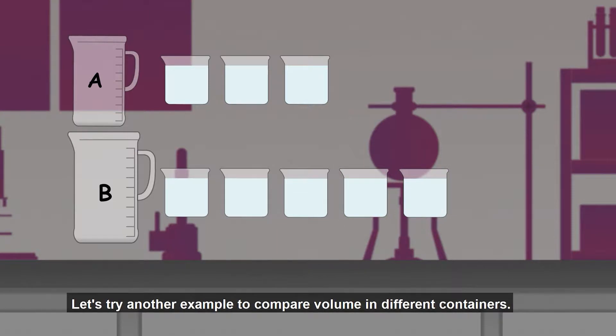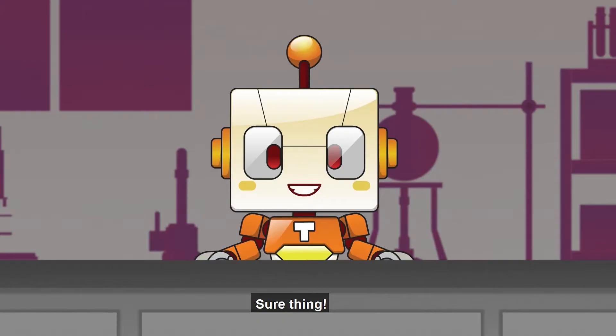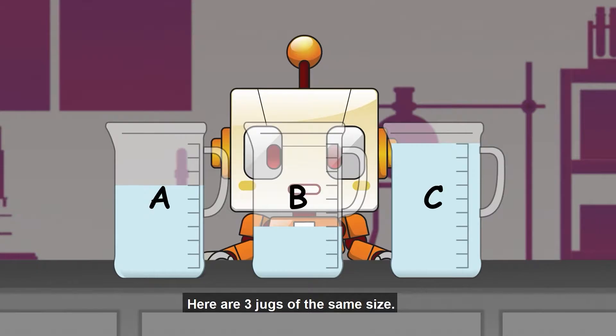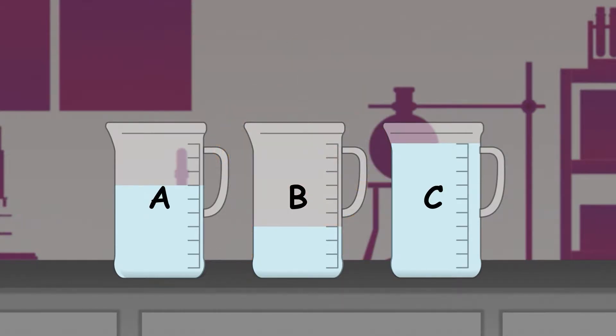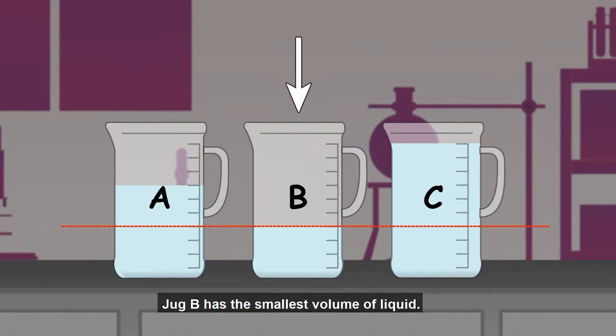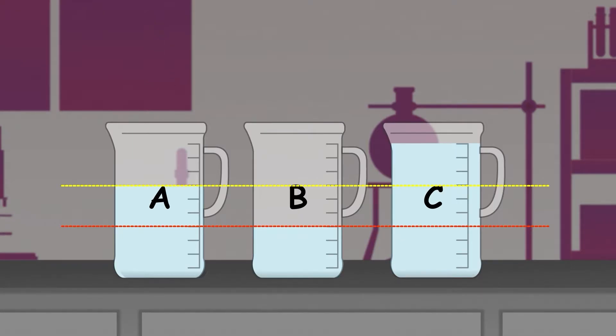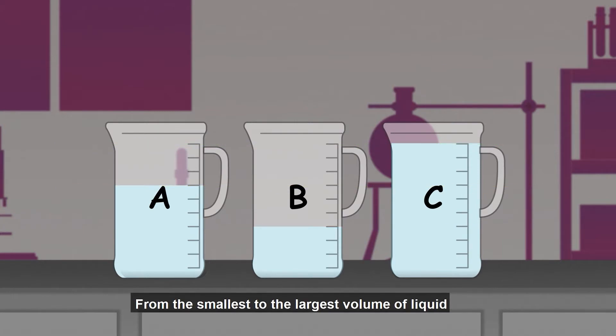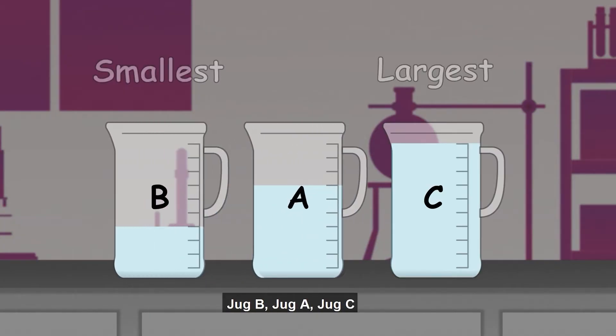Let's try another example to compare volume in different containers. Sure thing! Here are three jugs of the same size. Jug B has the smallest volume of liquid. Jug A contains more liquid than Jug B. Jug C has the largest volume of liquid. From the smallest to the largest volume of liquid: Jug B, Jug A, Jug C.